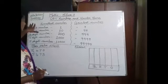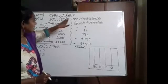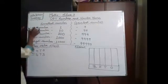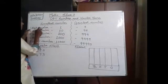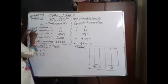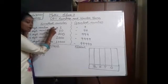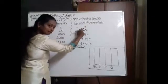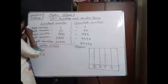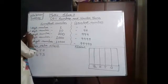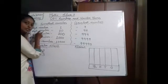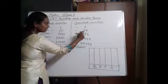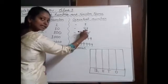So today, this side I have written the smallest number and this side I have written the greatest number. So the one-digit smallest number is 1. The greatest one-digit number is 9. Next, the smallest two-digit number is 10. Then the greatest two-digit number is 99.